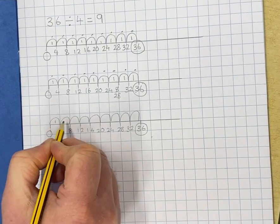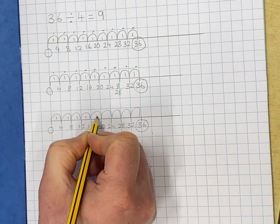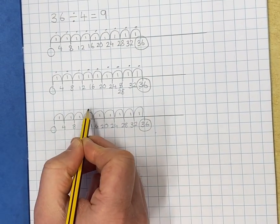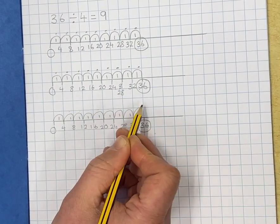So I've got the same answer. I'm just going to put one in each jump because it's one chunk of 4 each time. Okay. Final check. 1, 2, 3, 4, 5, 6, 7, 8, 9.